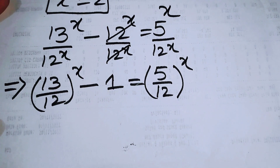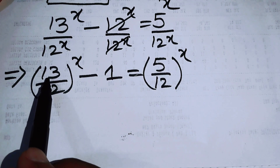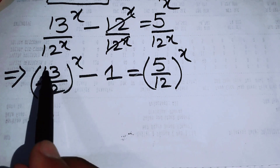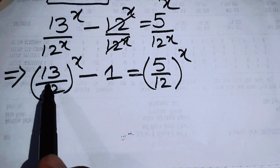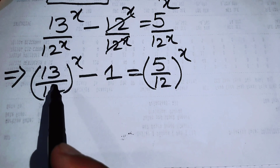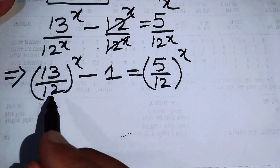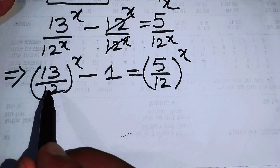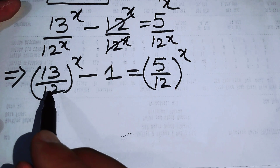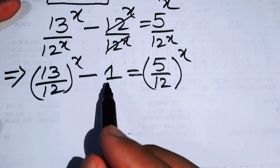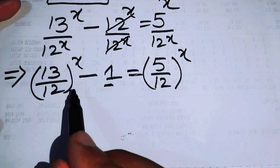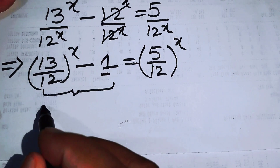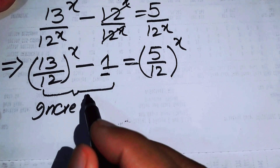Now focus on both sides. On the left, 13 is greater than 12, so 13/12 is greater than 1. When the base is greater than 1, the exponential function is an increasing function. Subtracting 1 from an increasing function still gives an increasing function, so the left-hand side is an increasing function.